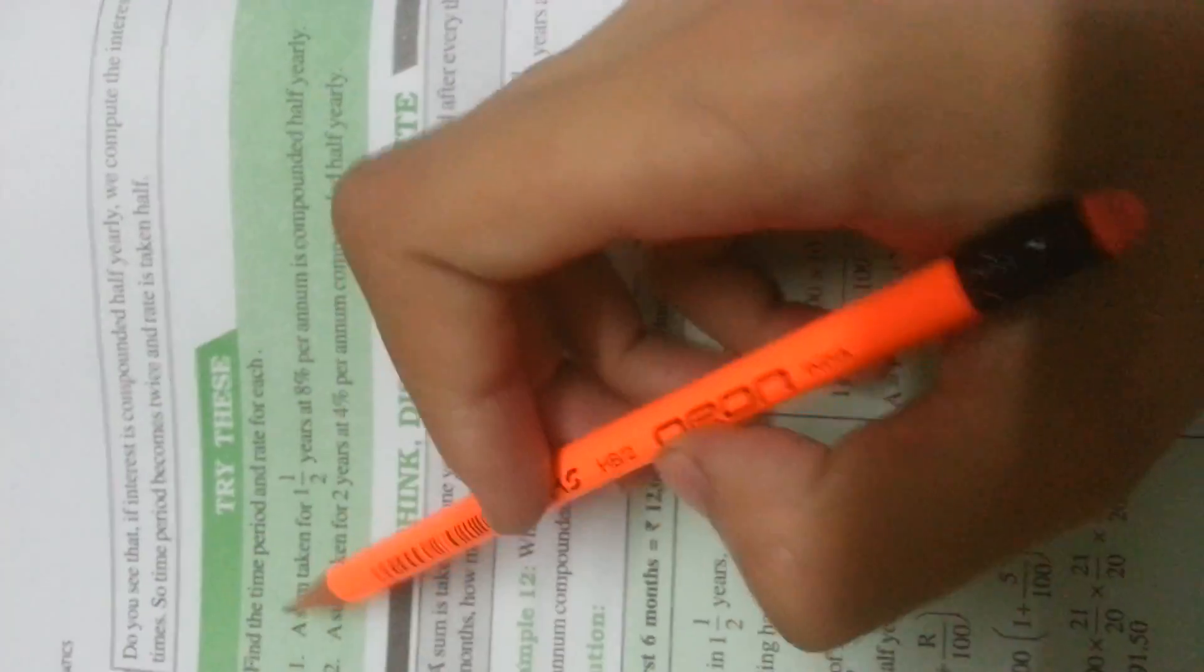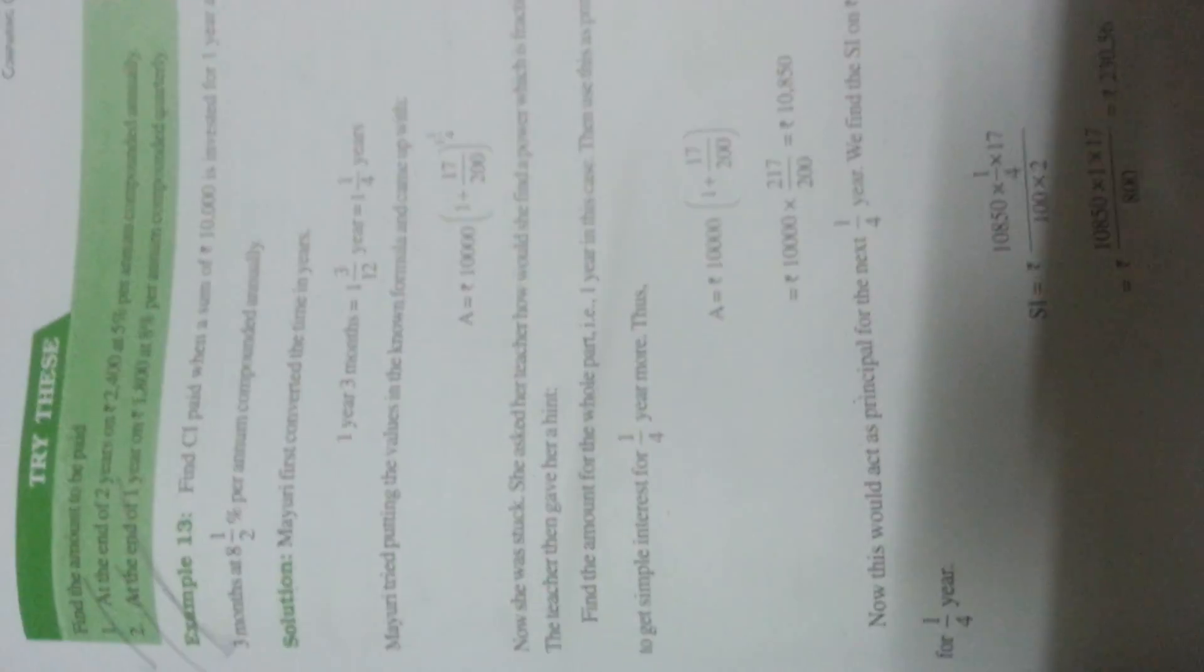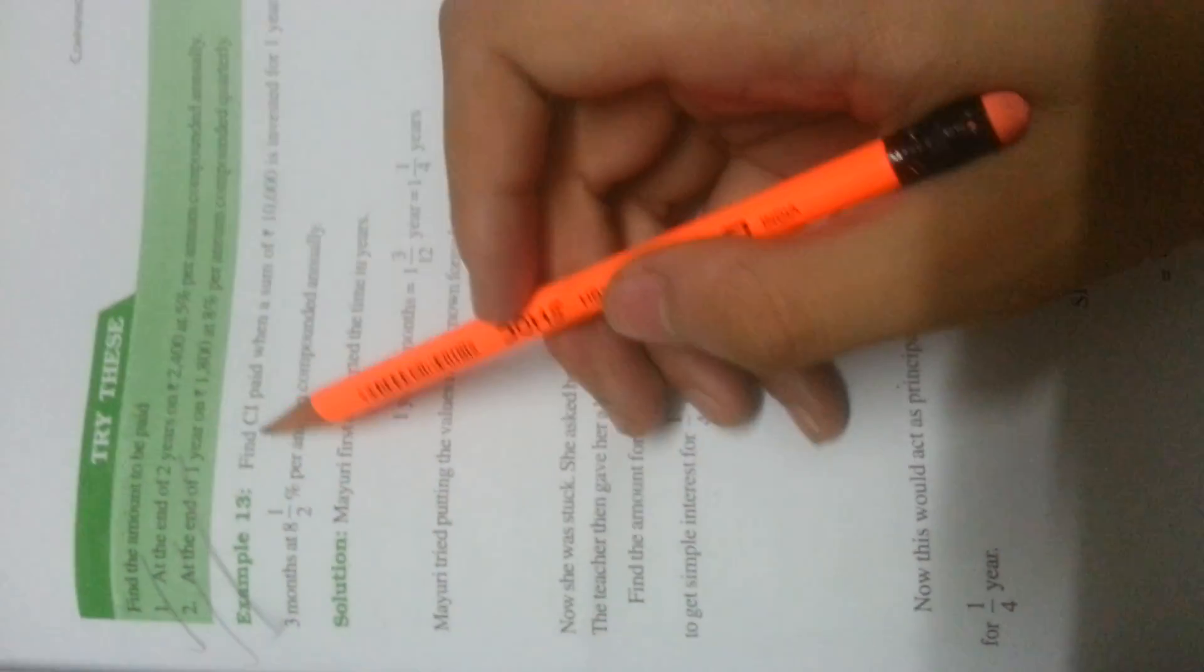See the Try These sums, they are important. Example 12, make sure you do it. Example 13 is very important because it has the rate in rational number form and you have to calculate it annually.